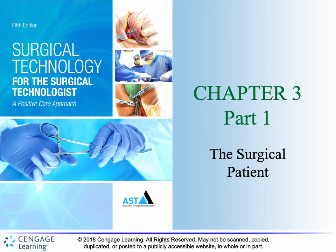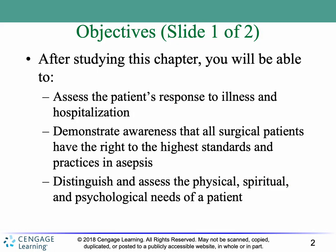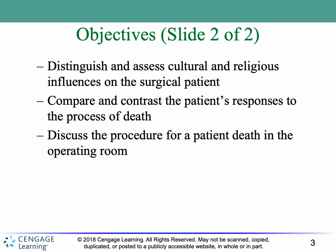In this lecture, we're going to be covering the first half of Chapter 3, which focuses on the surgical patient. After studying this chapter, you should be able to assess the different responses of the patient to illness and hospitalization, demonstrate awareness that all surgical patients have the right to the highest standards and practices in asepsis, and distinguish and assess the physical, spiritual, and psychological needs of the patient. You should also be able to distinguish between and assess cultural and religious influences associated with the surgical patient, compare and contrast the patient's responses to the process of death, and discuss the procedure for a patient death when it occurs in the operating room.